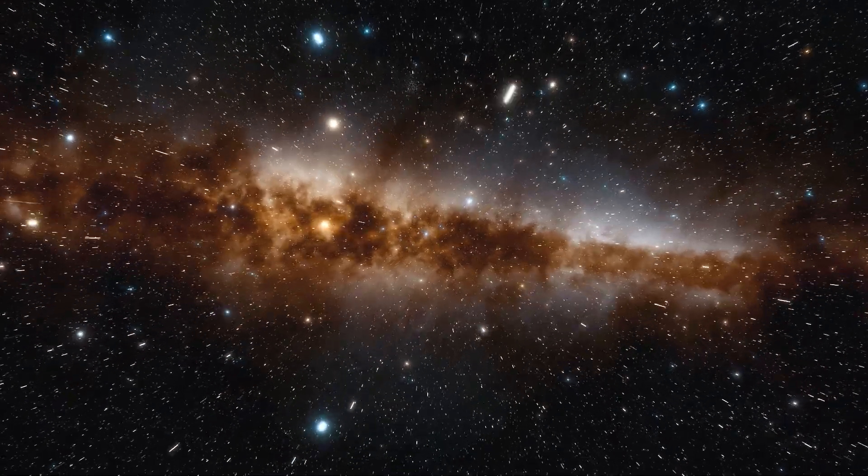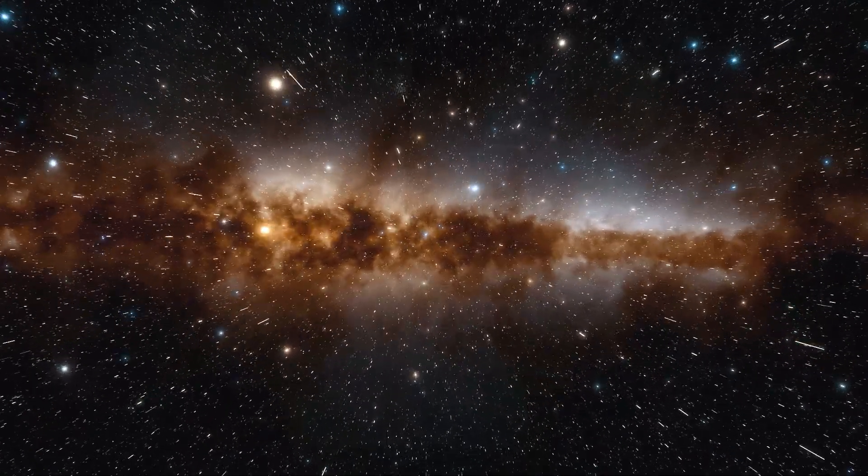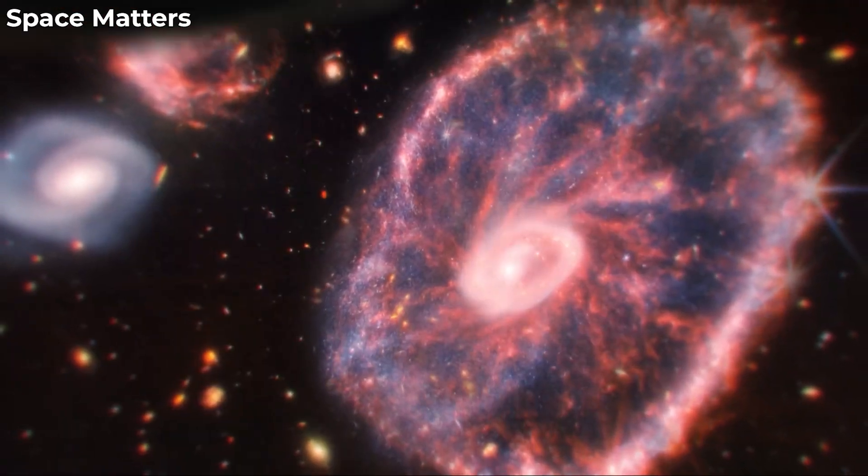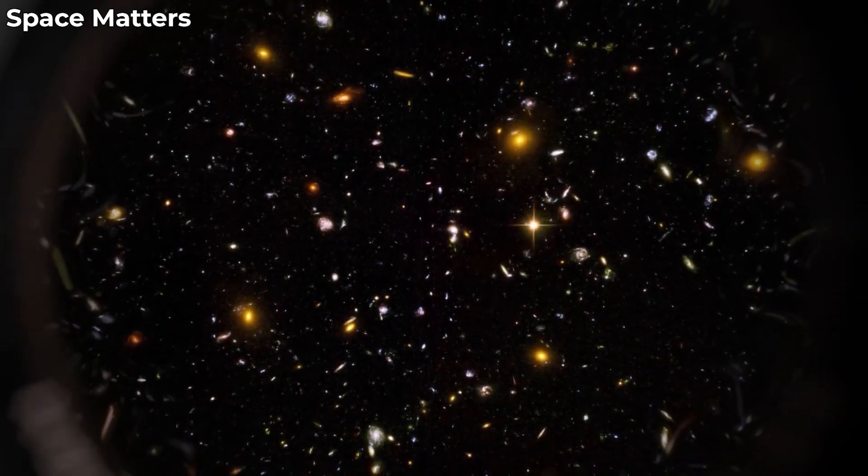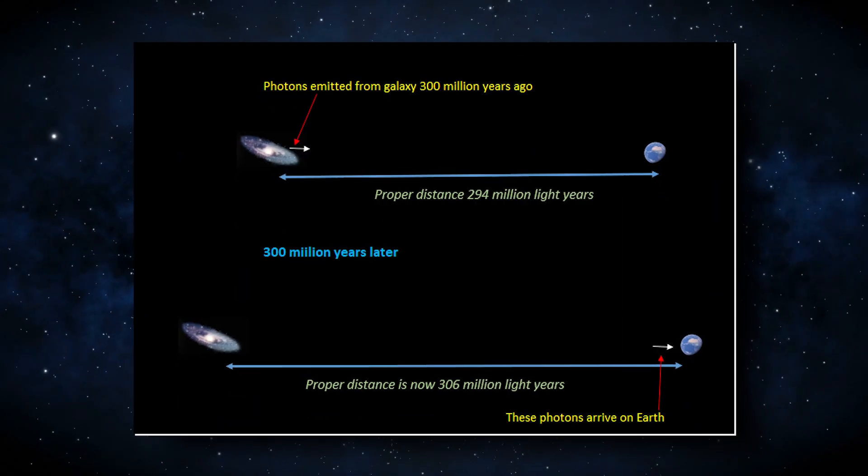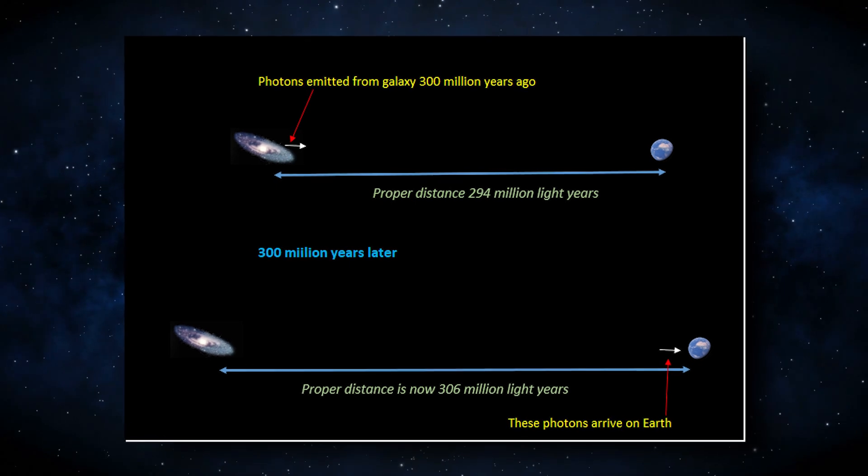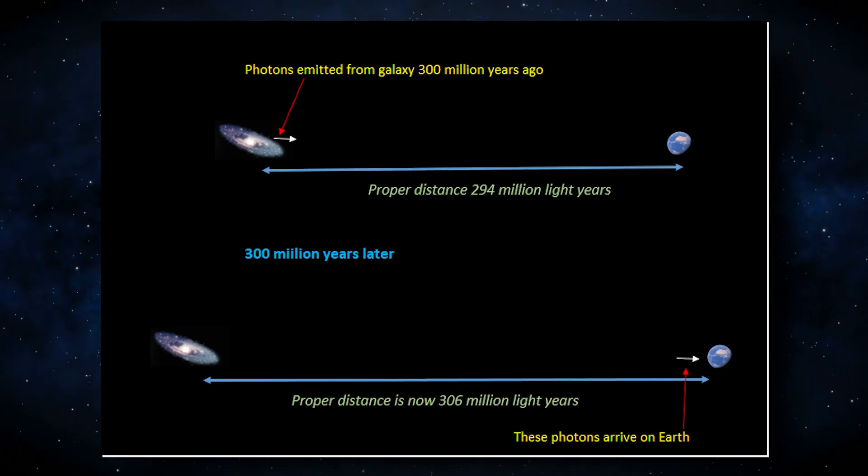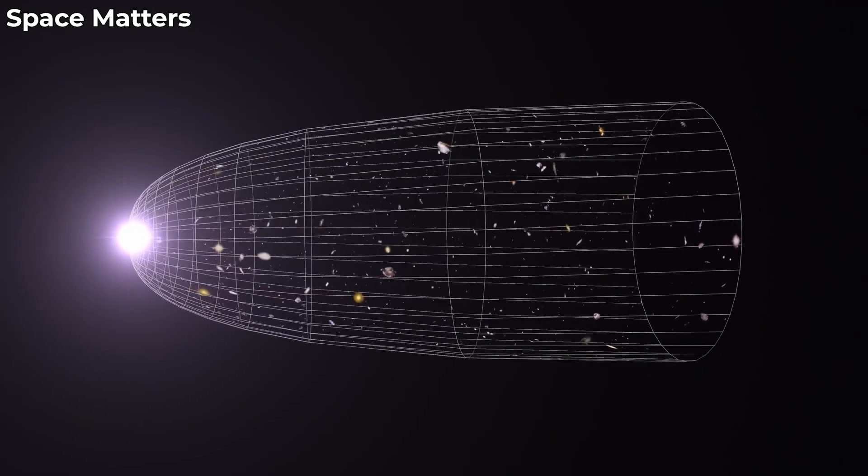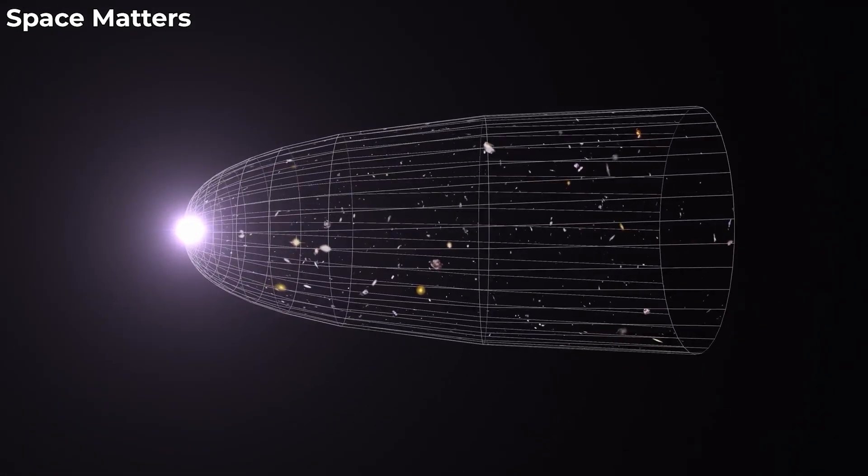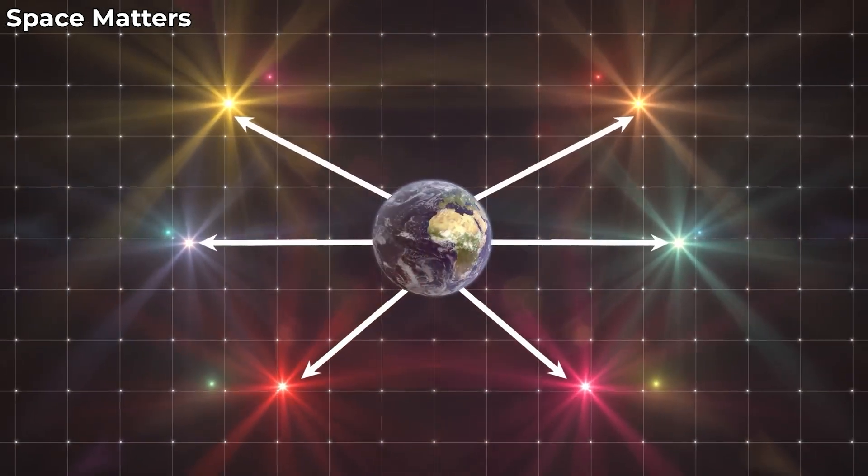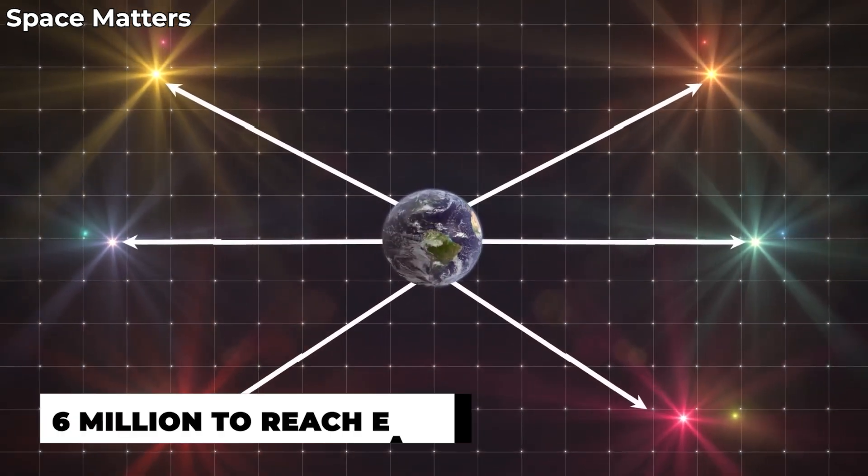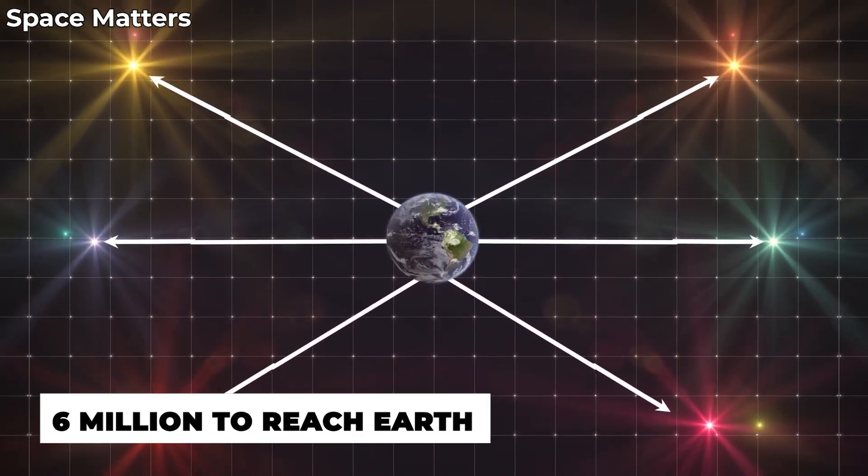But traveling in space isn't as simple as moving in a straight line. The universe constantly expands, which means the distance between two distant objects in space increases with time. Here, light is emitted from a galaxy 300 million years ago at a proper distance of 294 million light-years from Earth. However, the Earth is moving away from the emitted light photons as they are traveling towards our planet. So, instead of 294 million light-years, the photons travel another 6 million to reach Earth. But when they reach us, the proper distance of the galaxy will be around 306 million light-years.